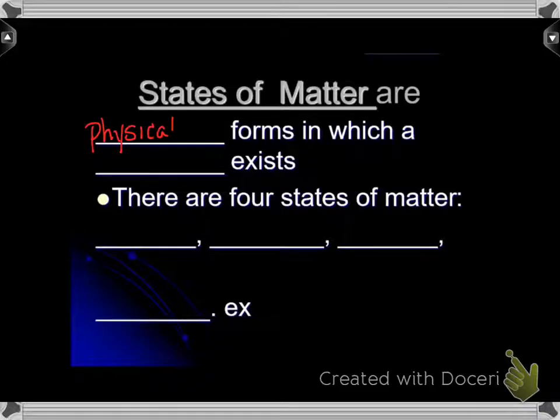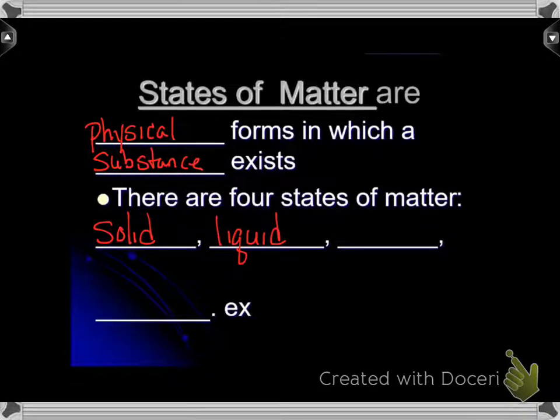States of matter are physical forms in which a substance exists. That's just a fancy way to talk about things you already know about like a solid, a liquid, a gas, and we're also putting in this category plasma.